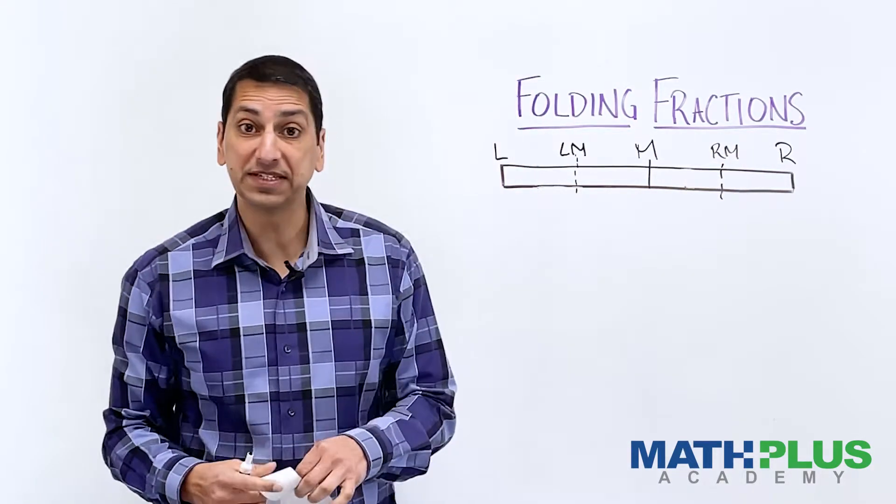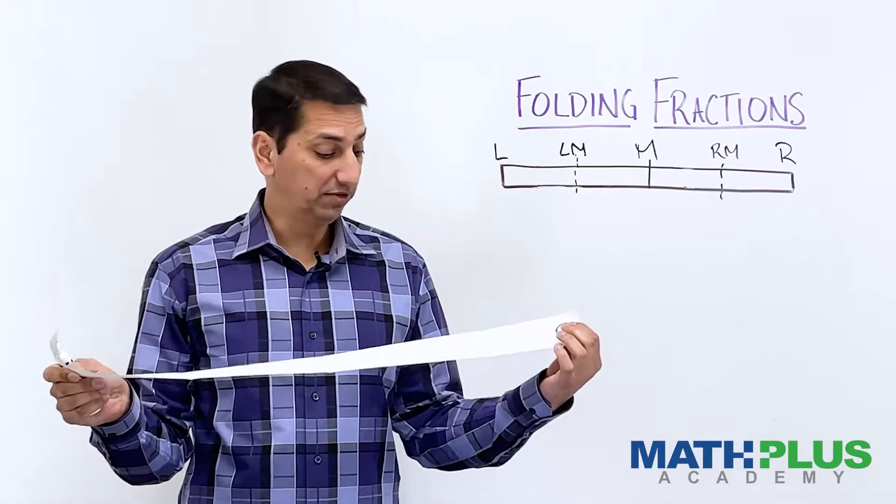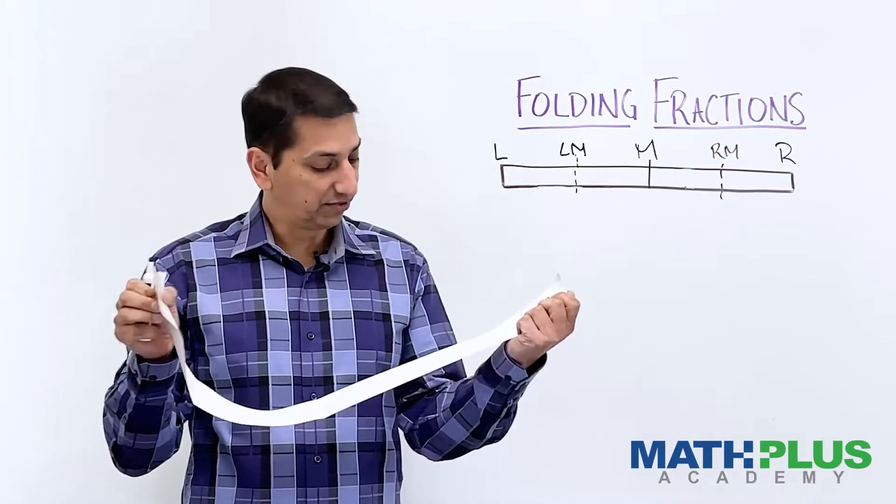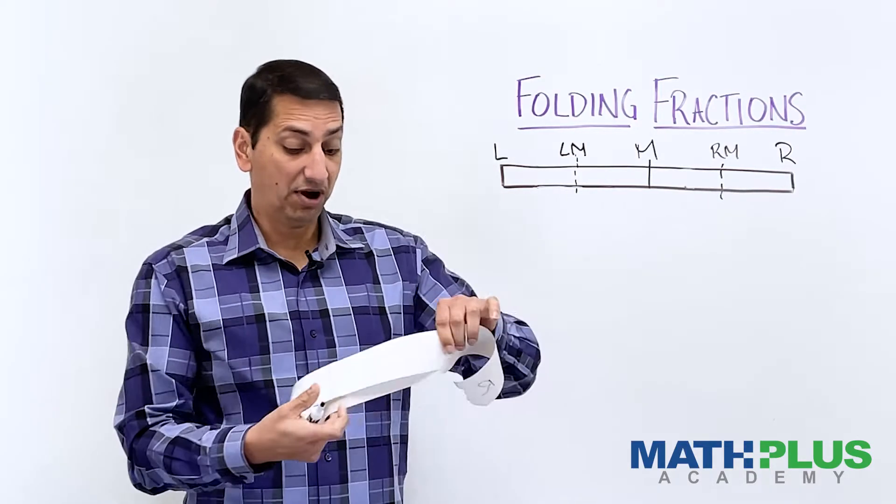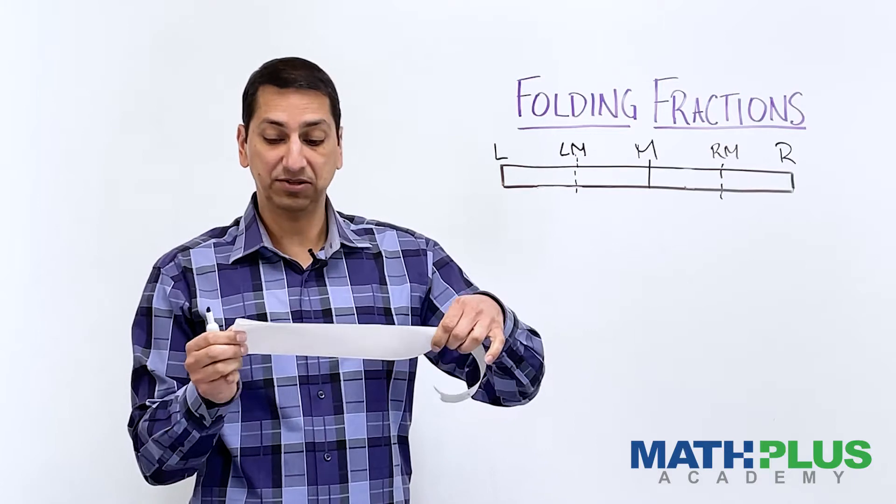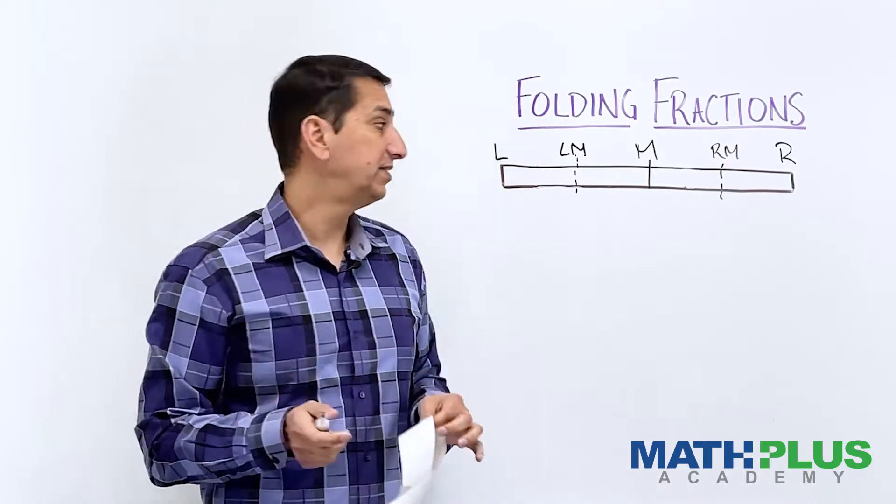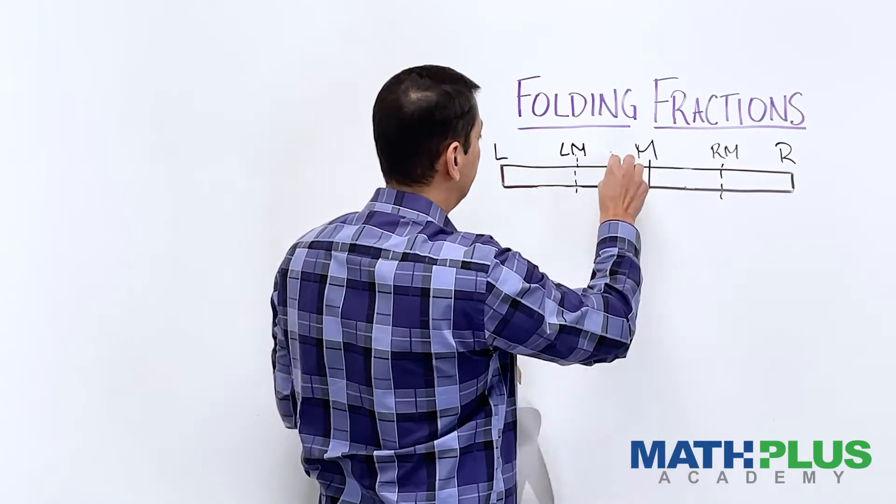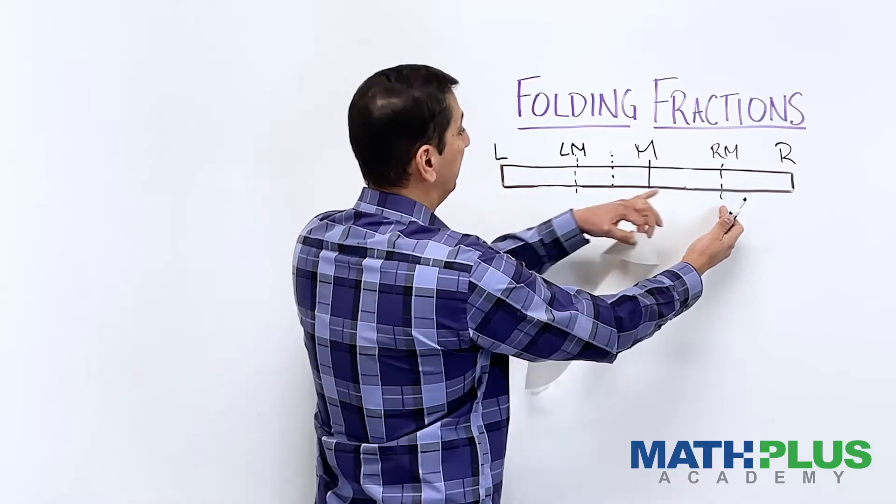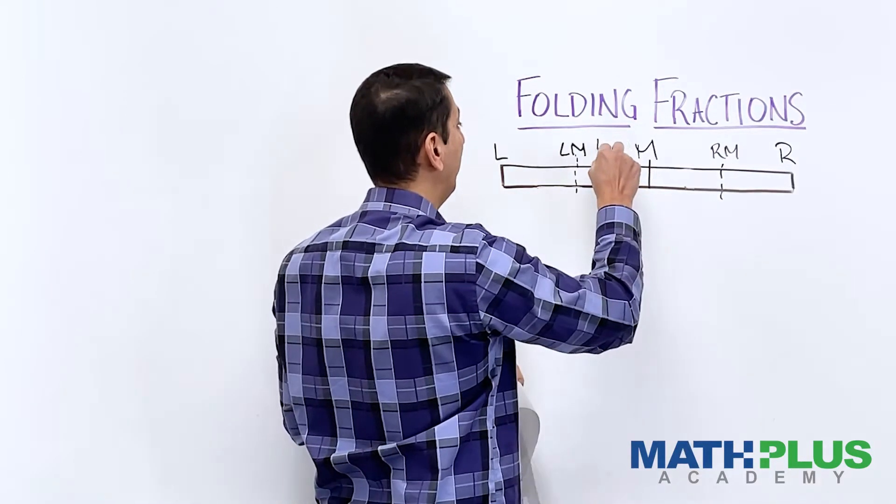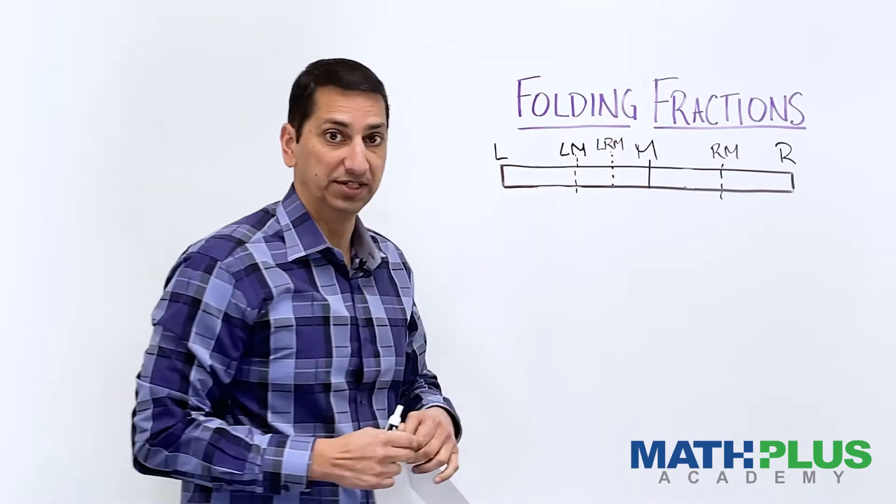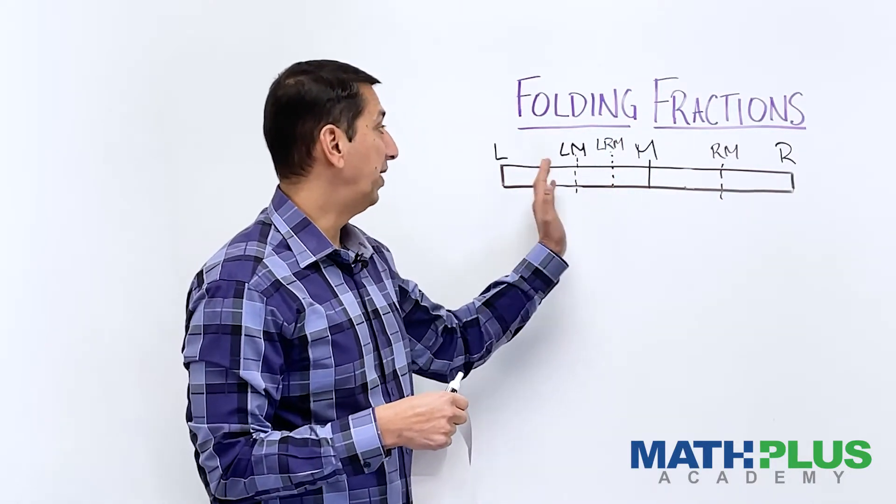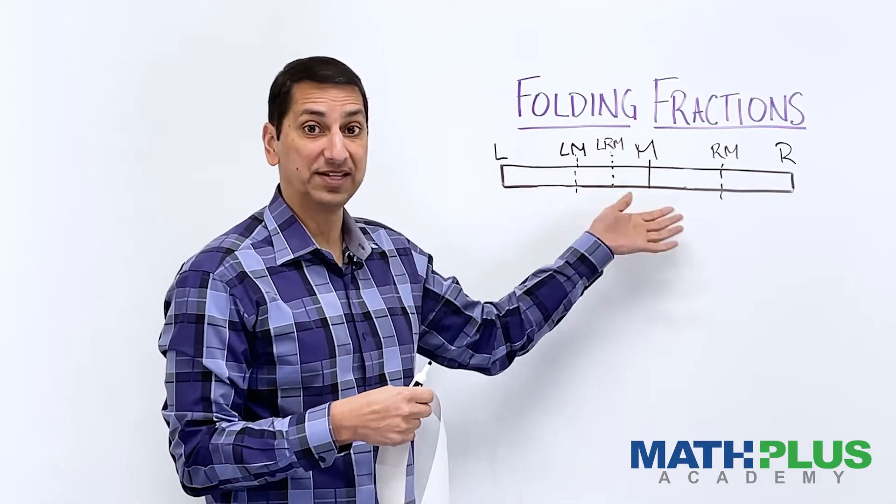Now we have two new creases. So we can fold to more locations. I could maybe take L and fold it over to the crease I made before over here, the RM crease, and make a new crease in my paper. And that new place, so if I folded this over to there, that crease would be somewhere in here. We would call that L being folded to RM is called LRM. So that's our notation of how these folds are made. You're sort of marking the fold by how you got there, what process you followed to get there.